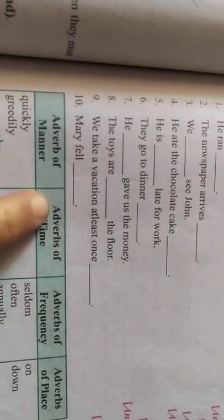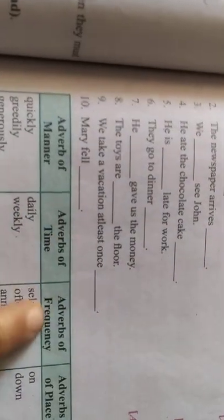So, we can see the adverbs of manner: quickly, greedily, generously. Adverbs of time: daily, weekly. Adverbs of frequency: seldom, often, annually. And towards our place: on, down.